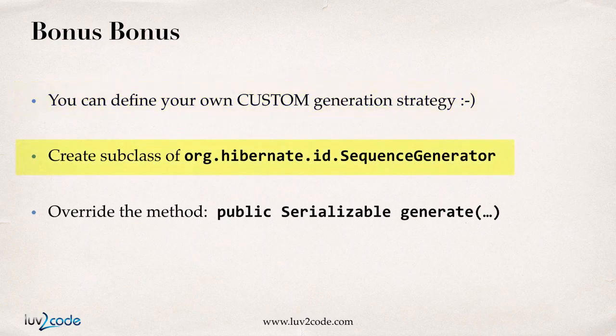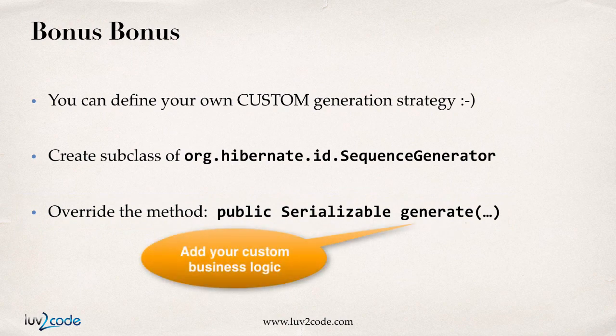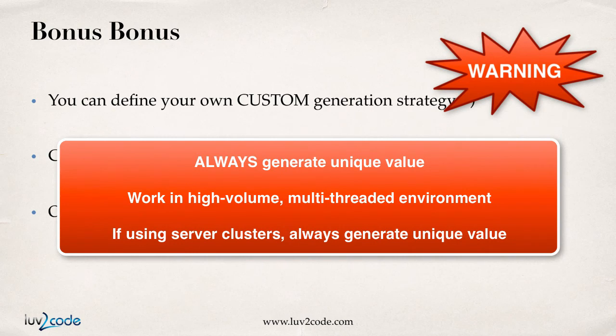The basic process is that you'd create a subclass of the org.hibernate.id.SequenceGenerator class. In your subclass, you would override the method generate. Inside of this generate method, you would do your own custom business logic for determining what the next ID is, and you return that as a value. You simply plug that into Hibernate, and then Hibernate will use your custom generator.